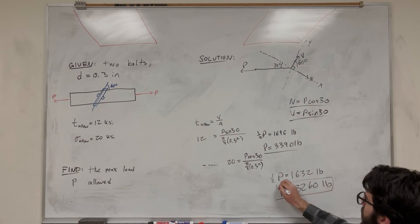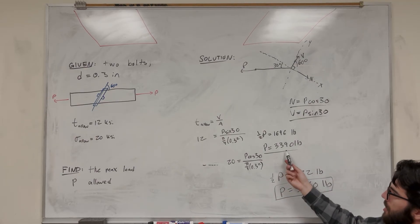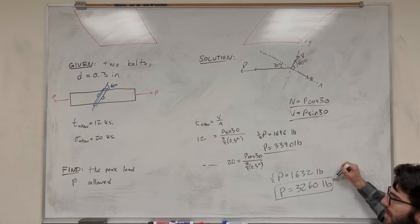So this number for the normal stress is less than that number of the shear stress, which means it's going to break first under normal stress. So this is the maximum P that we can apply to the system without it breaking.